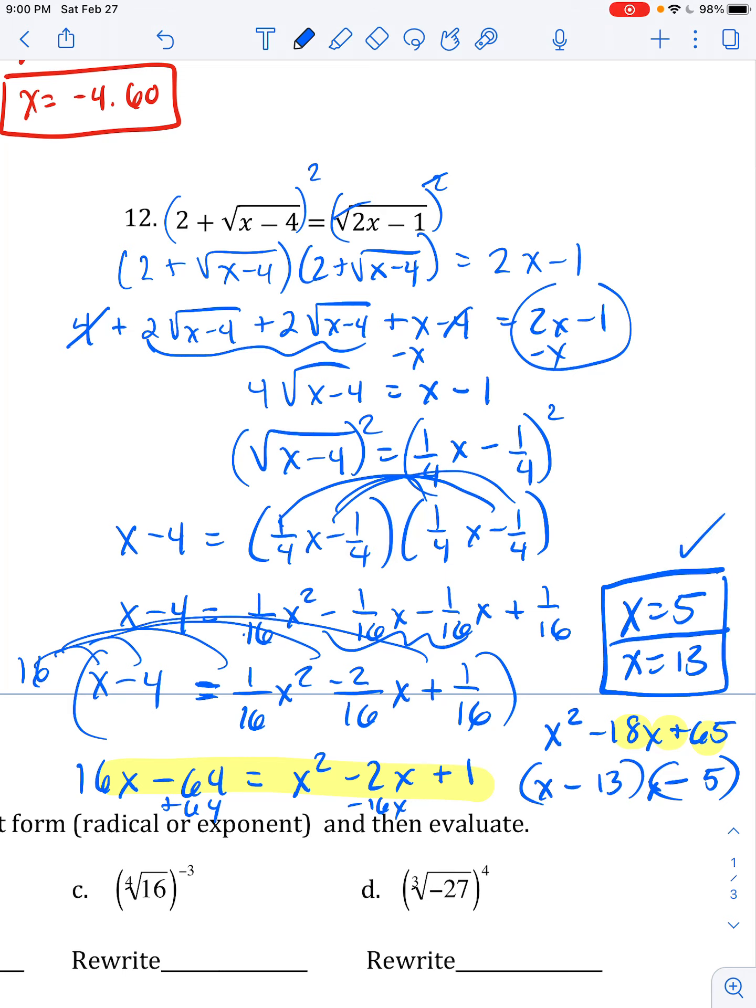Here I'm gonna go ahead and rewrite this one. I'm gonna have my 16 and it's gonna be to a -3 power with a fourth root. But now to evaluate it I'm gonna have that 1 over 16 to the 3/4 in order for it to be positive. Then that's gonna be looking for the fourth root of 16 cubed on the bottom. Fourth root of 16 is a 2, so when I cube it my final answer is 1 over 8.